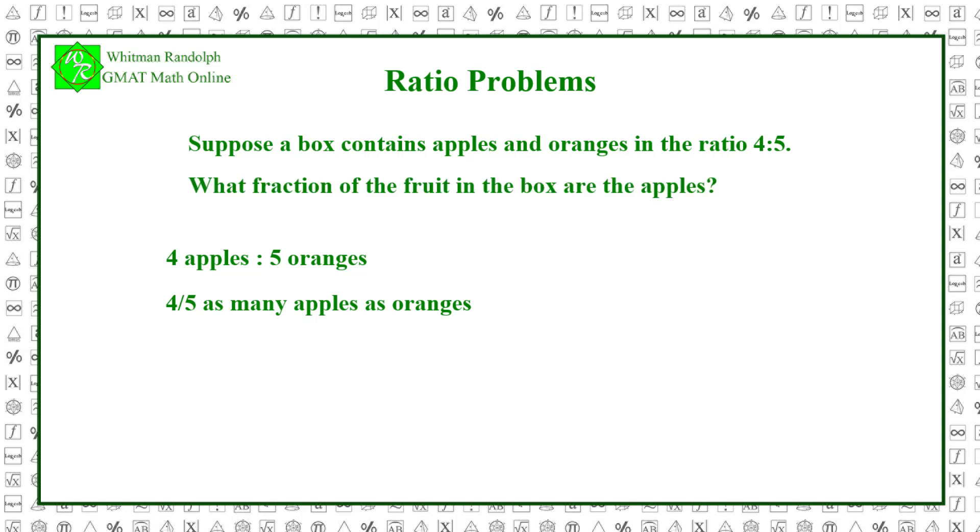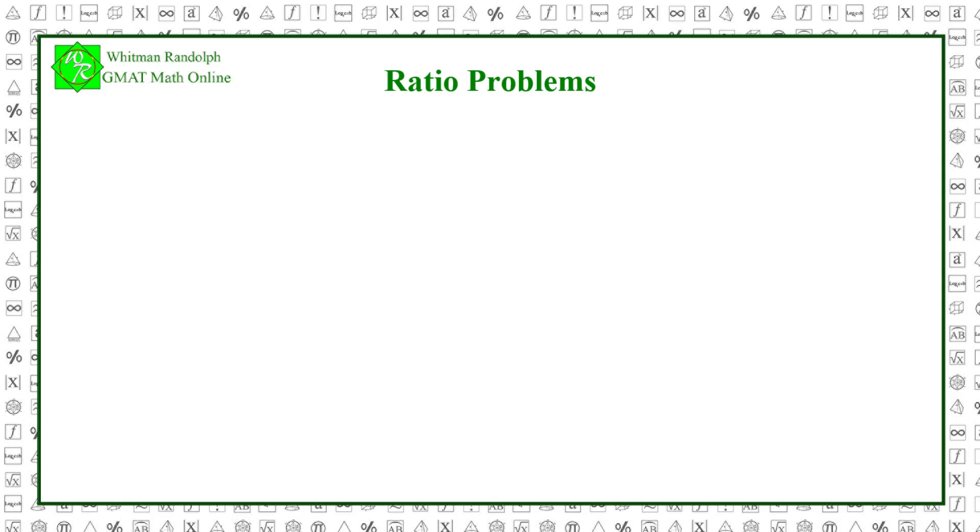So what fraction of the fruit in the box are the apples? The ratio tells us four apples for five oranges. So for every nine pieces of fruit, four are apples and five are oranges. Thus, the apples constitute four-ninths of the pieces of fruit and the oranges five-ninths. This principle typically applies with ratios.